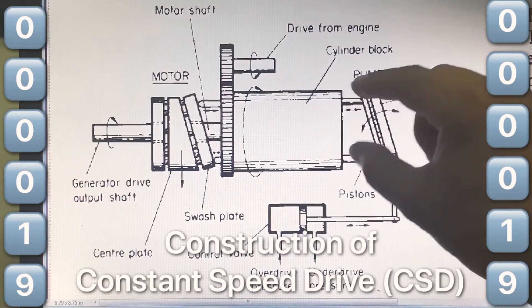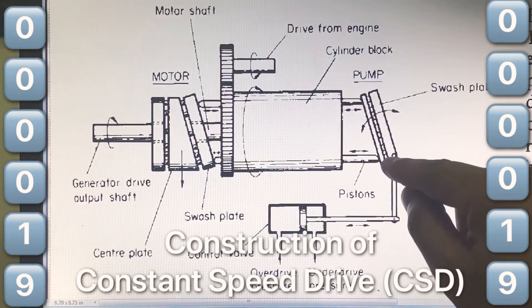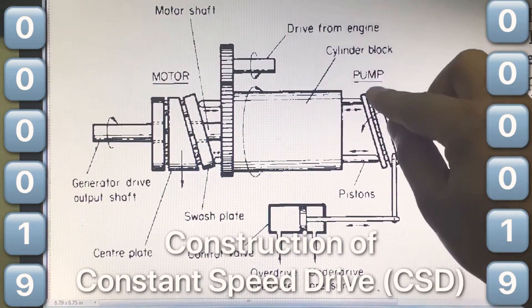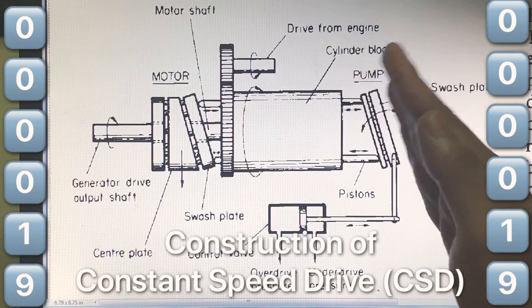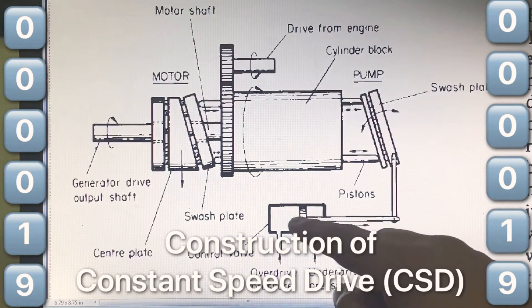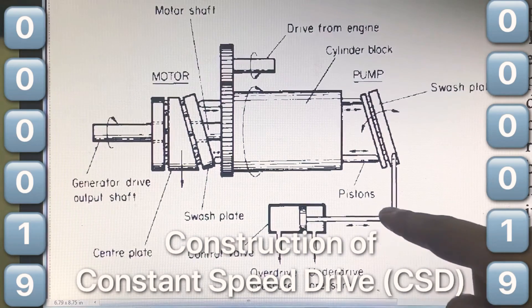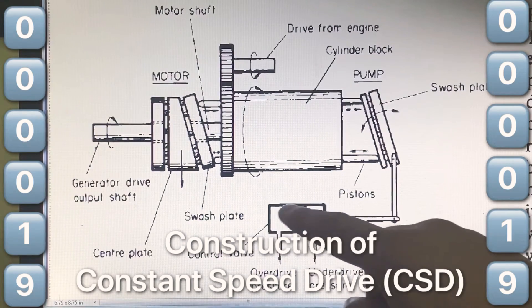So this cylinder block is connected to these pistons which are in turn connected with a swash plate. This swash plate can vary its angle depending on this piston. This piston moves because of the pressure in this unit.